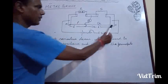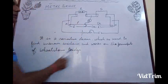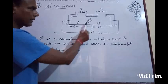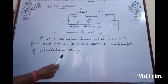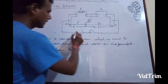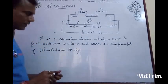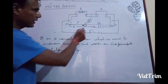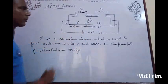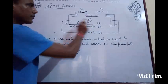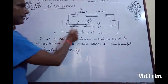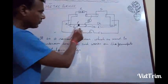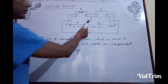Again repeating: MN is a wire of length 100 centimeters or 1 meter. R is the resistance box, S is the unknown resistance. There is a cell, a rheostat, and a key. The jockey and galvanometer are also present. When we switch on the circuit, current will start flowing. With the help of the jockey, we find the point at which the galvanometer shows zero deflection. Suppose it is showing zero deflection at length L from this side. When the jockey is placed at point J, that is at length L, the galvanometer shows zero deflection, meaning the bridge is balanced.